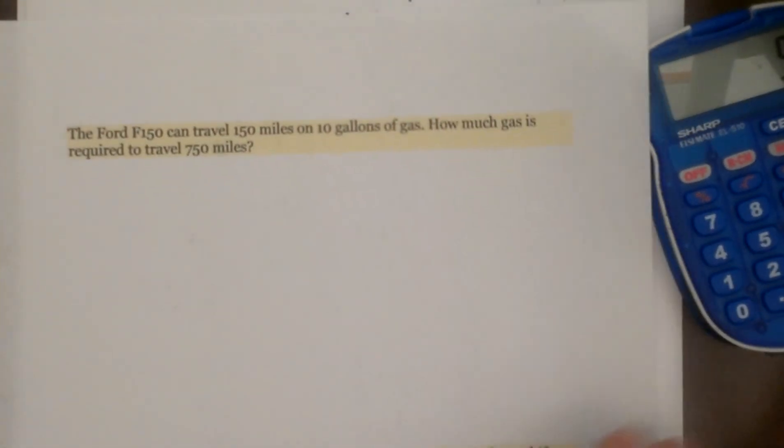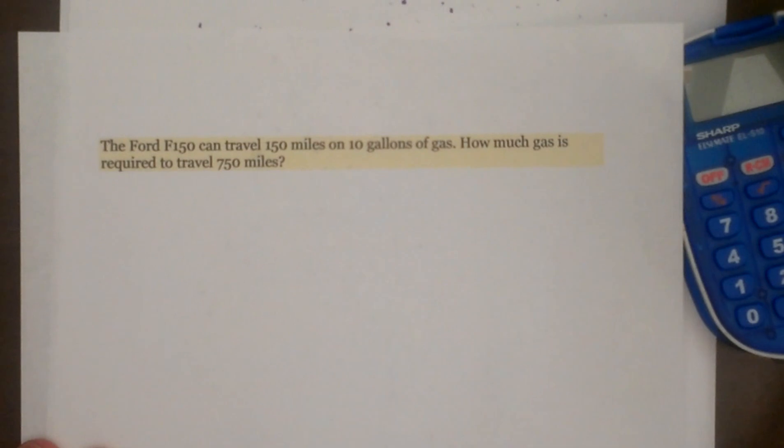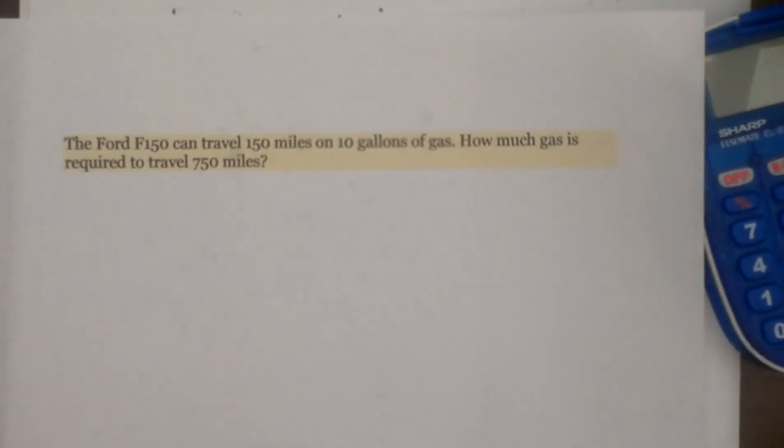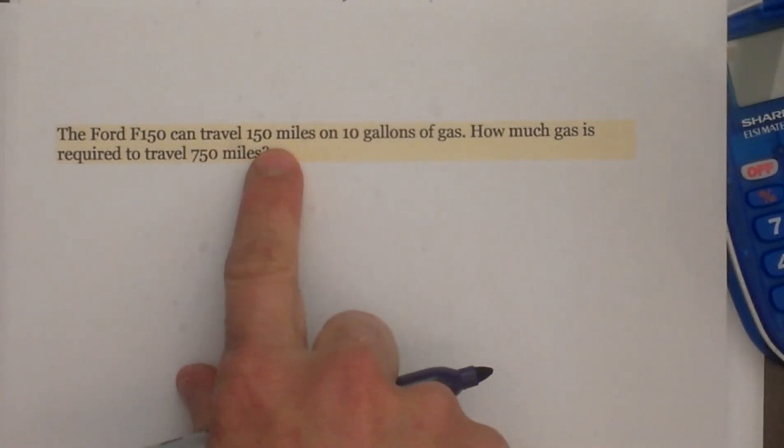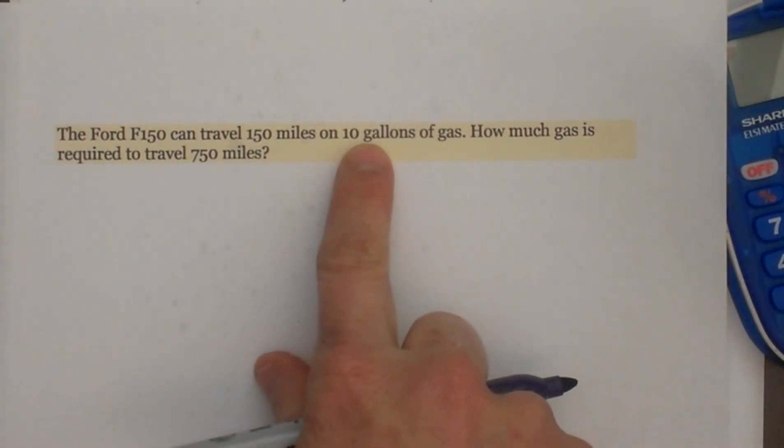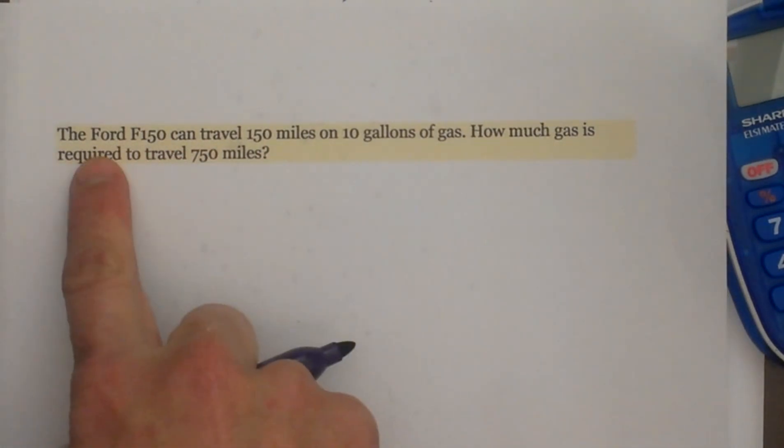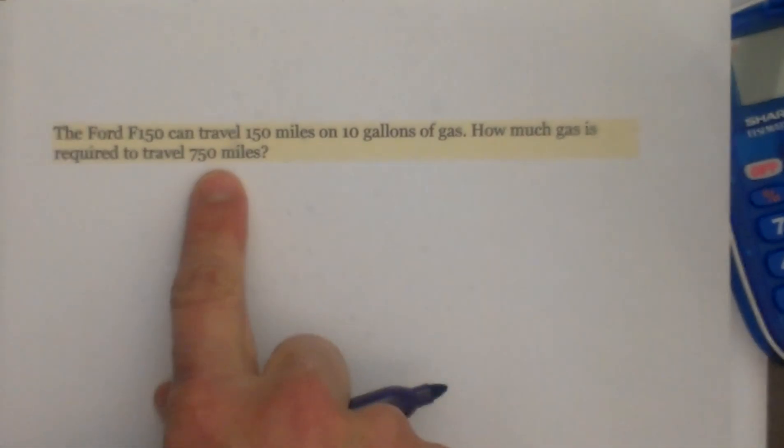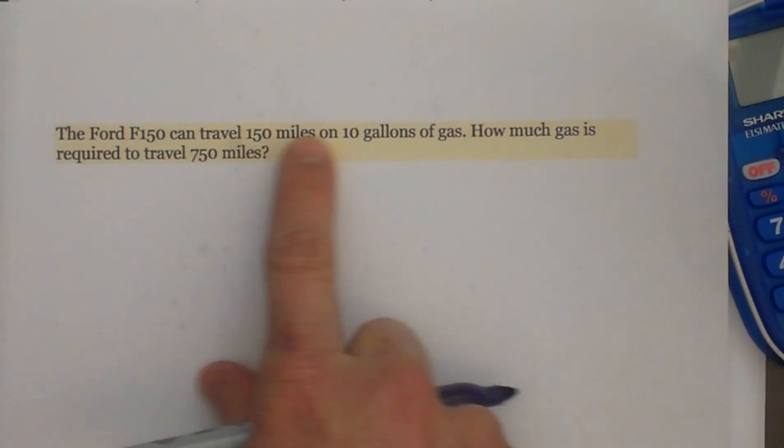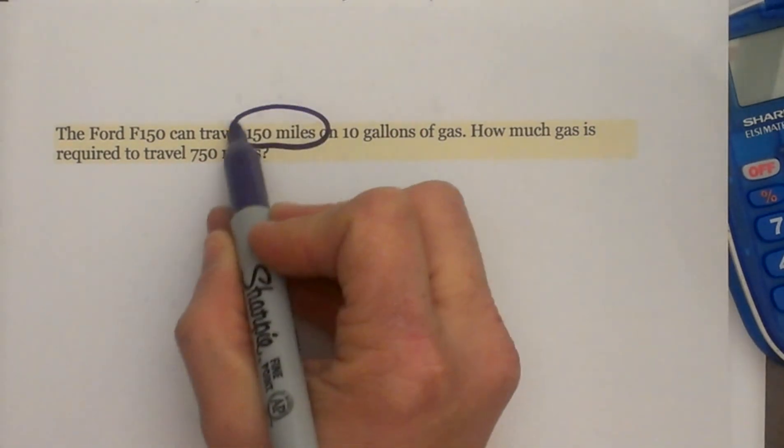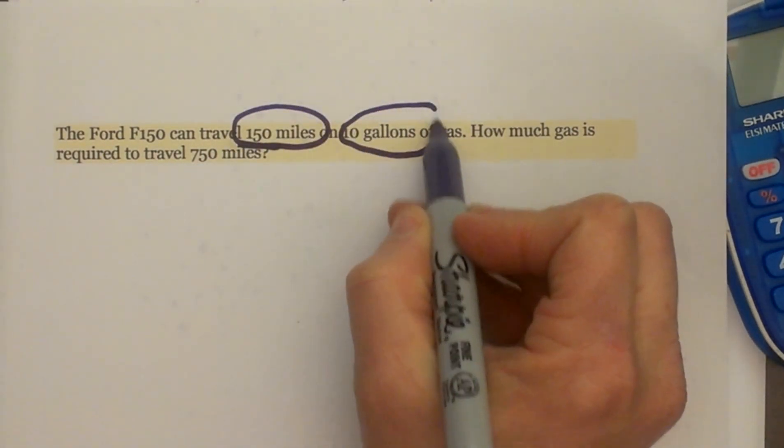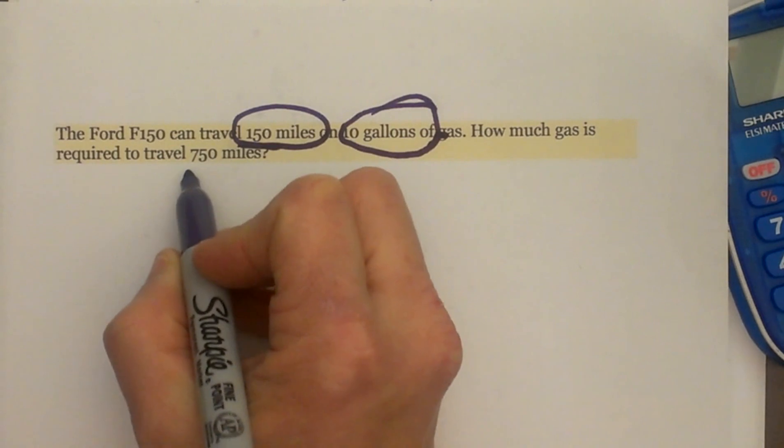The first one we're going to look at today is this one. Let me try to zoom in just a hair for you. It says the Ford F-150 can travel 150 miles on 10 gallons of gas. How much gas is required to travel 750 miles? So we've got miles and gallons. So let's circle the important information. So we have 150 miles and 10 gallons of gas. So that's what goes together.